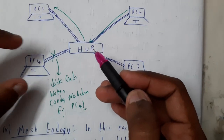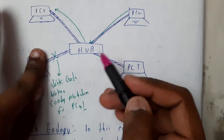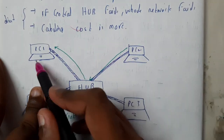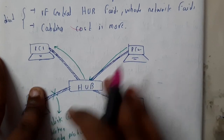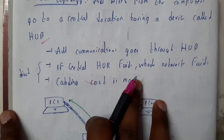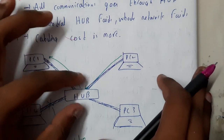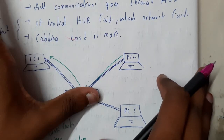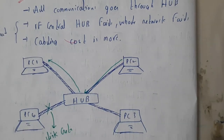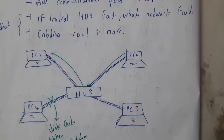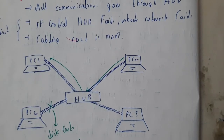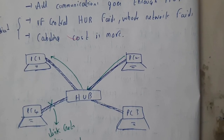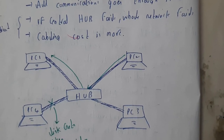The advantage is that if any link is broken — say this link is broken — data cannot reach PC4, but transfers between other PCs still work through the hub. The disadvantages are: if the central hub fails, the whole network fails, which is a significant problem. Also, cabling cost is high — four cables for four systems, and for 100 systems you need 100 cables. That is why star topology is not widely used.